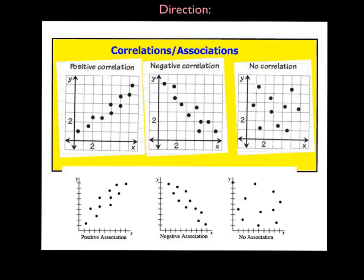Another thing we're going to use to describe scatter plots — we're always going to try to describe the direction. If you look at the first graph, the direction is going up; it's a positive correlation because if you draw a fitted line, the line goes up from left to right. The second one, the points are going down from left to right — that's called a negative correlation. And then no correlation means no pattern at all.